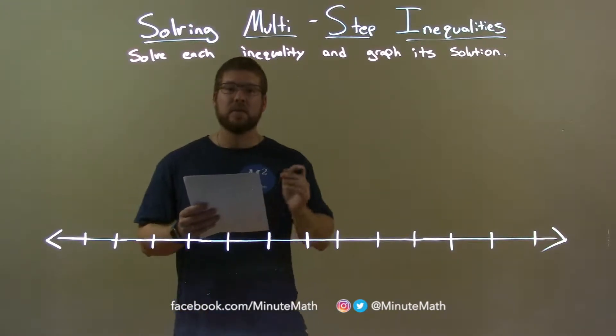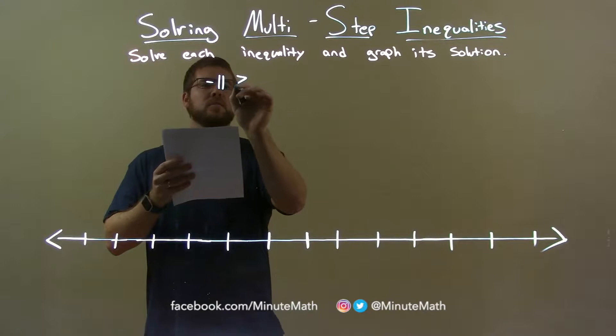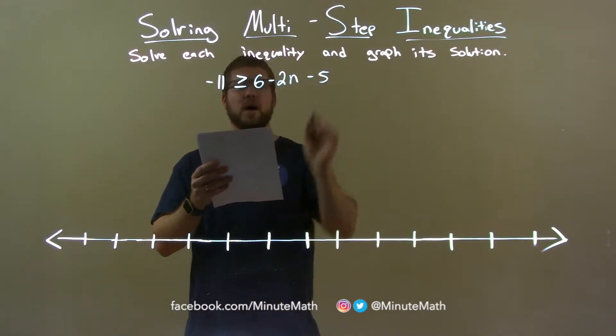Now, if I was given this inequality, negative 11 is greater than or equal to 6 minus 2n minus 5.